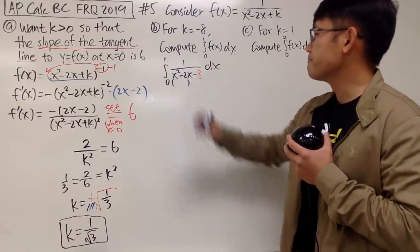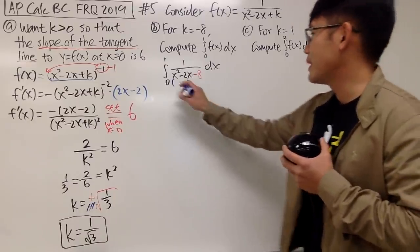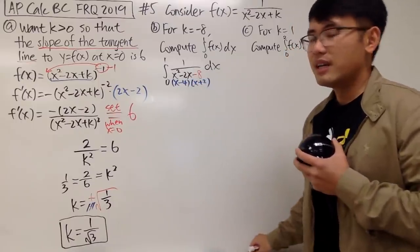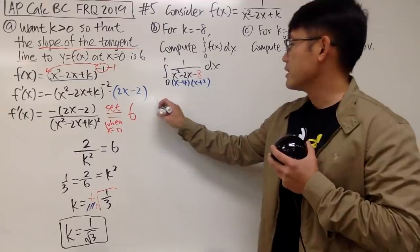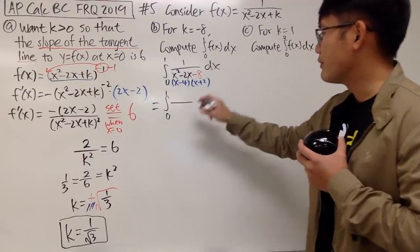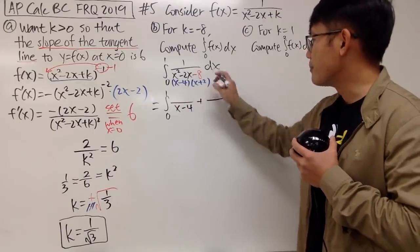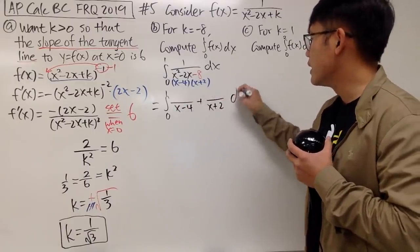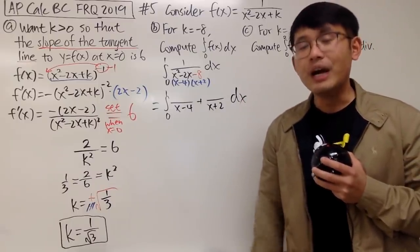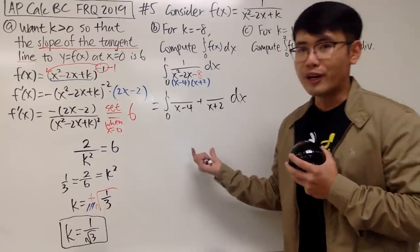Factoring gives us (x minus 4)(x plus 2). So we have the integral from 0 to 1, and we need some number over (x minus 4) plus some other number over (x plus 2). We'll use the cover-up method in this video. I'm not sure if the cover-up method is explicitly required for the AP test — you can show the full work if needed.